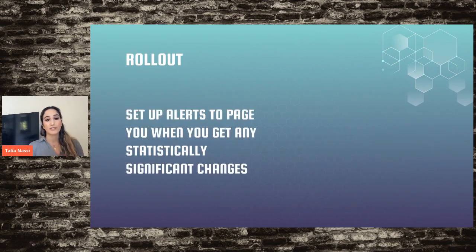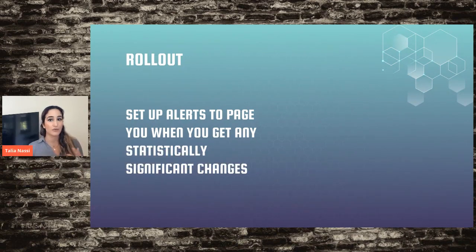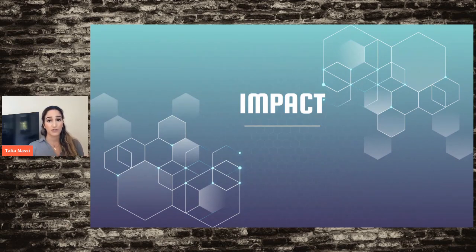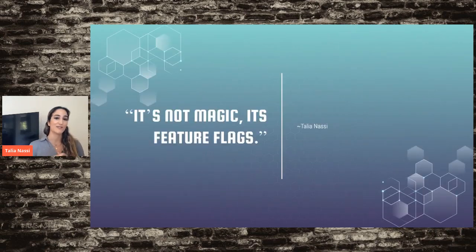Set up alerts to page you when you get statistically significant changes. If your business metrics are badly impacted, you should get aggressive alerts through PagerDuty or similar tools. For neutral or positive results, maybe just an email alert. Feature flagging allows you to directly correlate the impact of your changes by pushing information about flags to your internal analytics system. Your business decisions should be based on data, and a smart feature flagging system gives you that data. As I like to say: it's not magic, it's just feature flags.